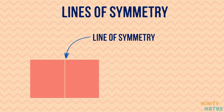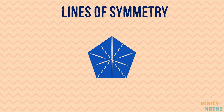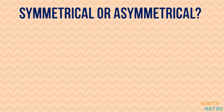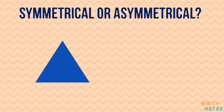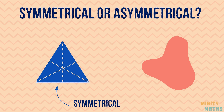So can we have more than one line of symmetry? The answer is yes — some shapes have more than one line of symmetry. If a shape has one or more lines of symmetry, it is a symmetrical shape. If there are no lines of symmetry, it is an asymmetrical shape.